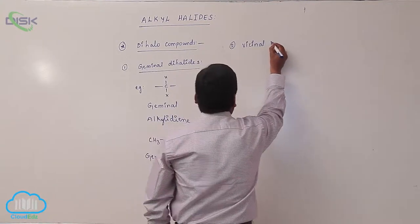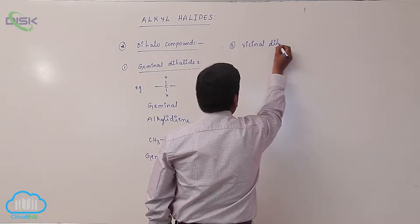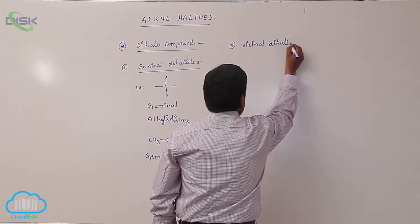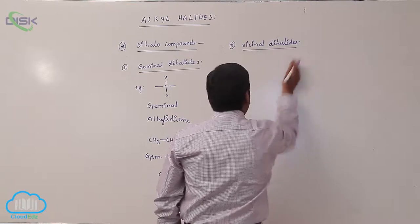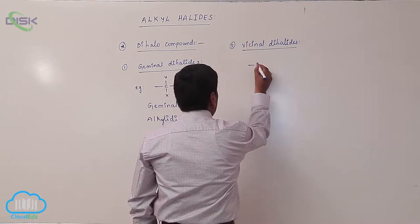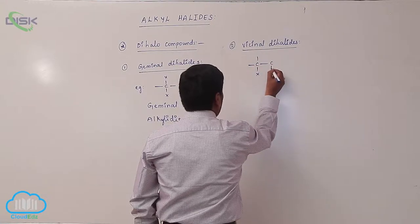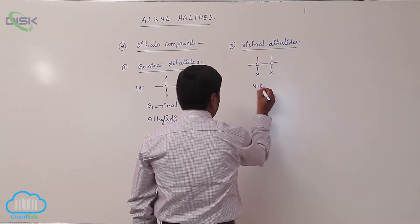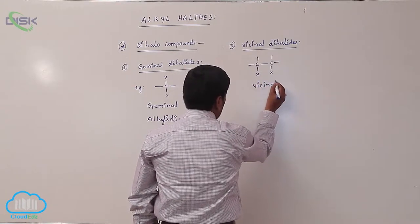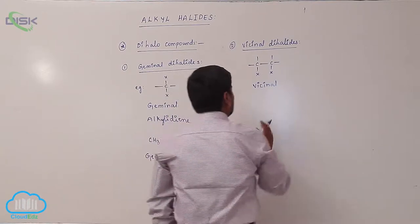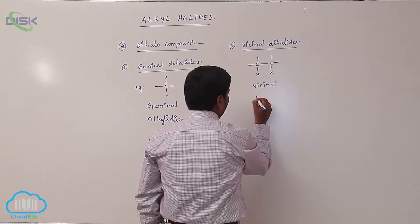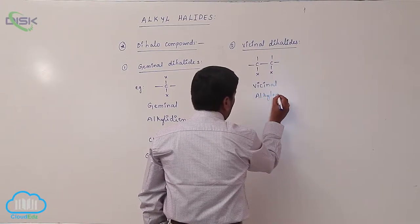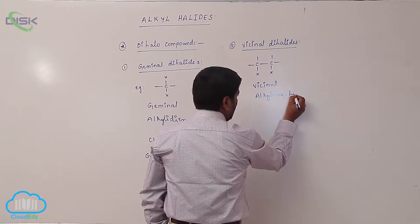Vicinal dihalo compounds — vicinal dihalides. If two halogens are on adjacent carbon atoms, it is known as vicinal alkylene halide.